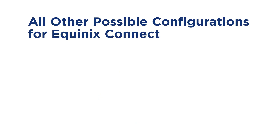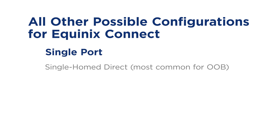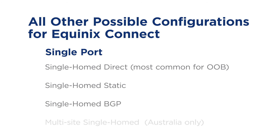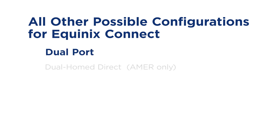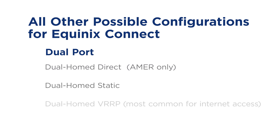Configuration choices — let's look at the different ways Equinix Connect can be configured. Single-port and dual-port. For single-port configurations, we have single-homed direct, which is the most common configuration for out-of-band use; and dual-homed direct, which is only available in the Americas. Dual-port options include dual-homed static, dual-homed VRRP — which is the most common configuration for internet access — and dual-homed BGP. Thanks for watching.